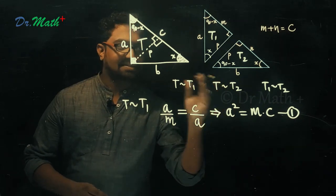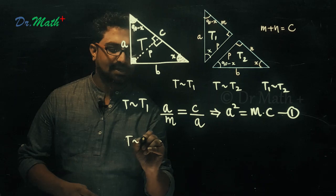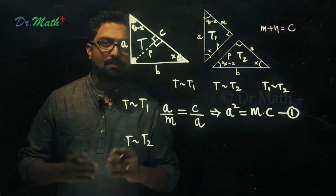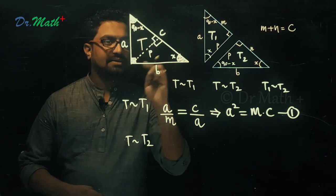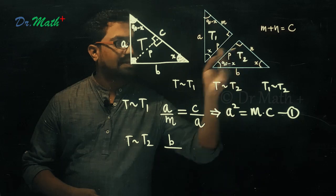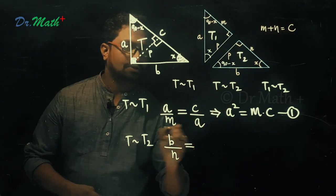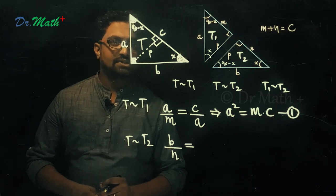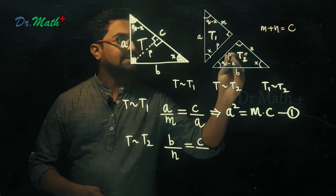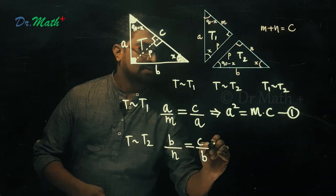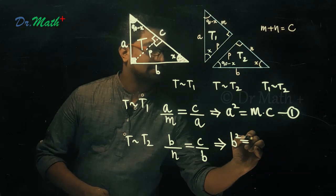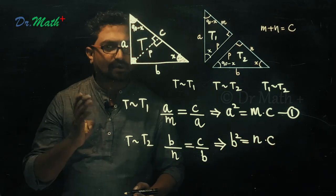Now let's consider the second result: T is similar to T2. Identifying corresponding sides and writing their ratios — the side opposite to 90 minus X degrees in the bigger triangle is B, and in triangle T2 the side opposite to 90 minus X is N. The side opposite to 90 degrees in T is C, and in T2 it is B. Cross-multiplying gives us B square equals N times C — let me call this Result 2.